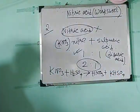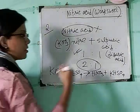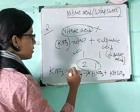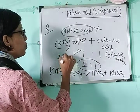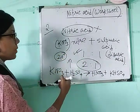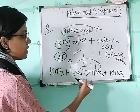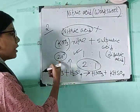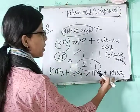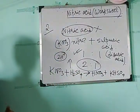When potassium nitrate is reacted with sulfuric acid, you can see that sulfuric acid is a dibasic acid because it produces 2H⁺ ions. But only 1H⁺ ion is utilized in the preparation of nitric acid, and the other H⁺ ion is utilized in the preparation of potassium bisulfate.